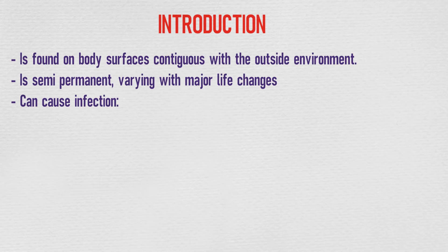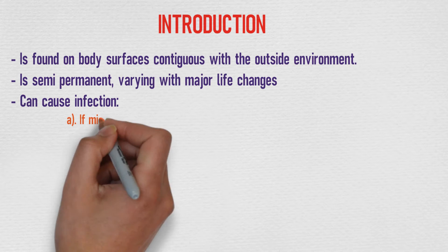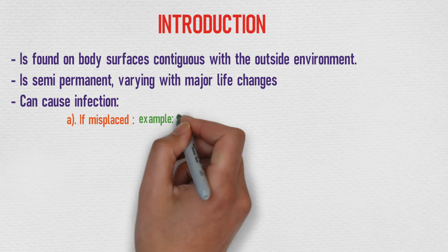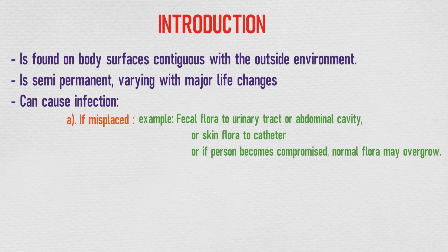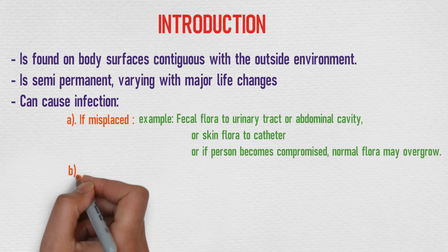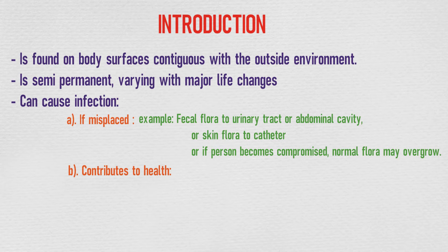Normal flora is found on body surfaces that are contiguous with the outside environment. They are semi-permanent and consist of varying organisms with major life changes. They can cause infection in certain conditions — for example, if misplaced, such as fecal flora entering the urinary tract or abdominal cavity, or skin flora introduced via a catheter, or if a person becomes immunocompromised, normal flora may overgrow, such as oral thrush.